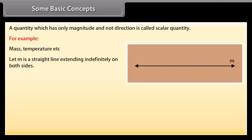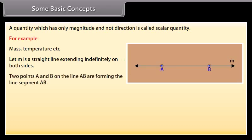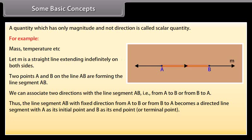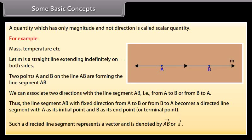Let M be a straight line extending indefinitely on both sides. Two points A and B on the line are forming the line segment AB. We can associate two directions with the line segment AB — that is, from A to B or from B to A. Thus, the line segment AB with fixed direction from A to B or from B to A becomes a directed line segment, with A as its initial point and B as its end point or terminal point. Such a directed line segment represents a vector and is denoted by vector AB or vector A.